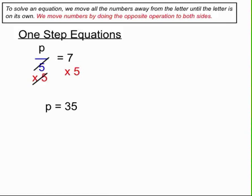So that's it — we've solved a whole bunch of one-step equations. We've moved numbers away from the letter until the letter is on its own by doing the opposite operation to both sides and calculating the result. And there you have one-step equations. In the next video we'll have a look at two-step equations. Thanks for your time.